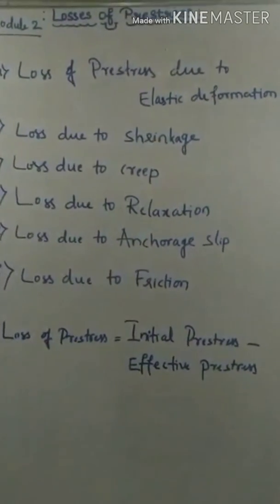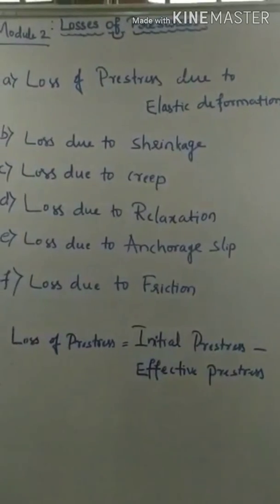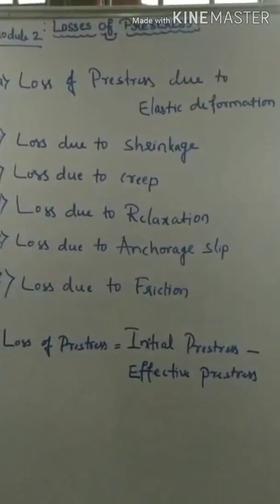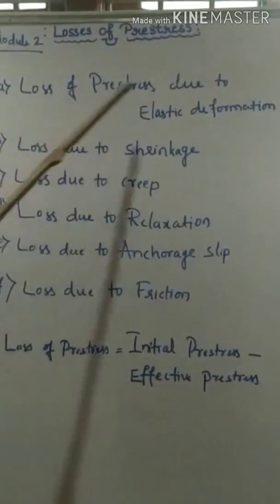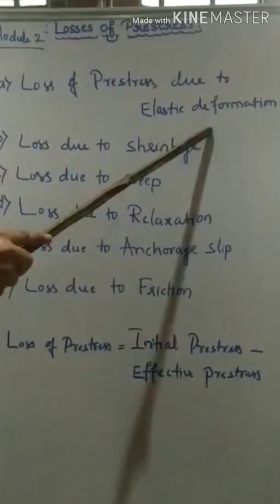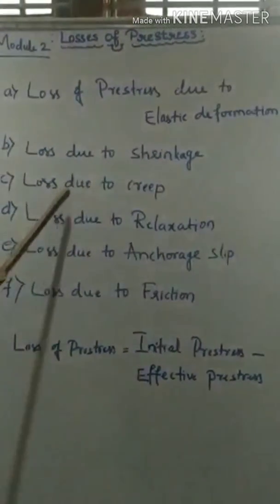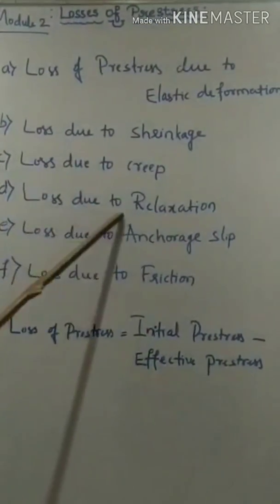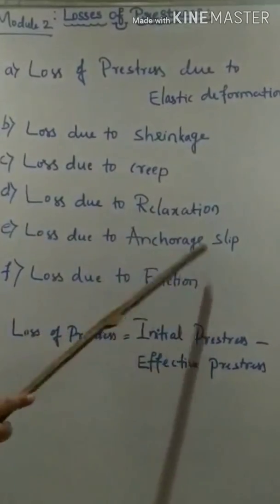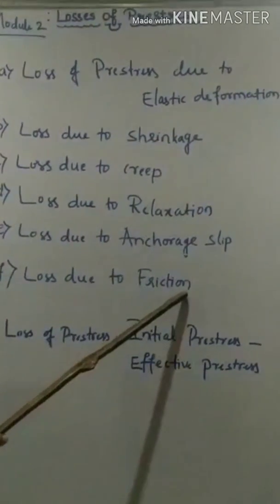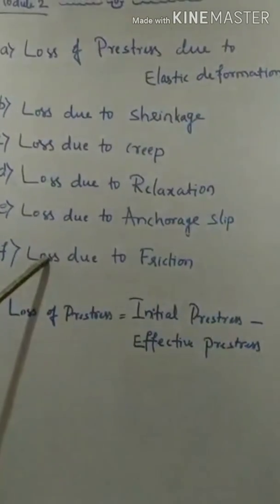Firstly, we will learn about what are the losses encountered in the PSC beam. There are 6 types of losses: loss of pre-stress due to elastic deformation, loss due to shrinkage, loss due to creep, loss due to relaxation, loss due to anchorage slip, and loss due to friction.